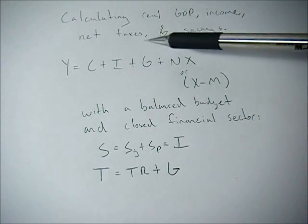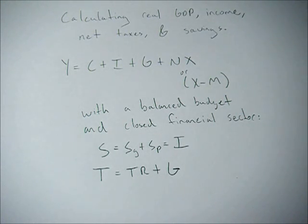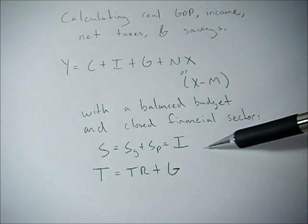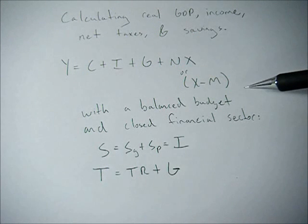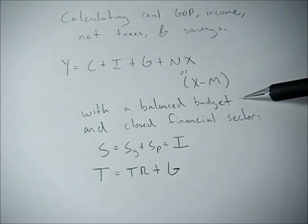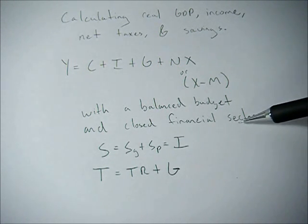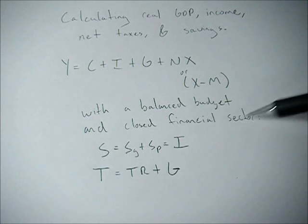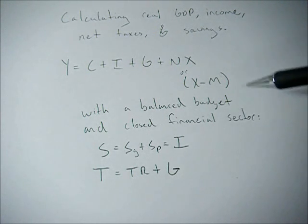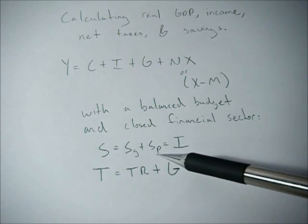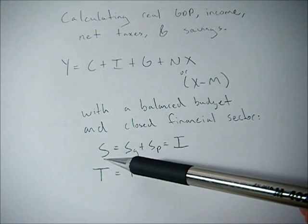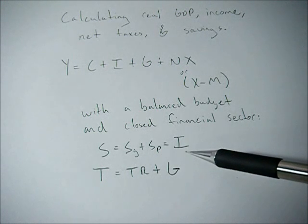Now the trick to getting net taxes or savings is to recognize these equilibrium conditions. So if we assume that we have a balanced budget, which is most often assumed in introductory classes, and we have a closed financial sector, which means we don't allow for international finance to occur, then government saving plus private savings equals economy-wide savings and thus equals investment.